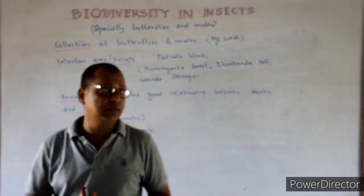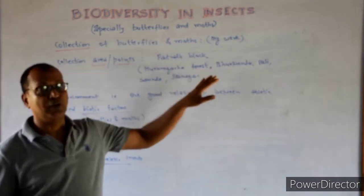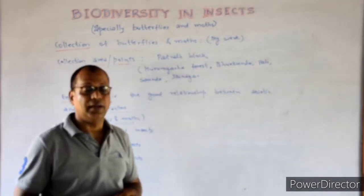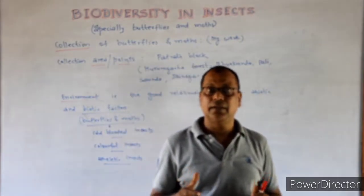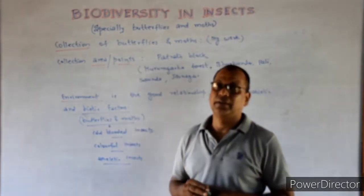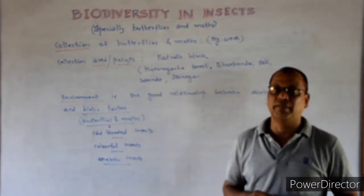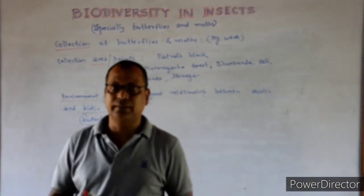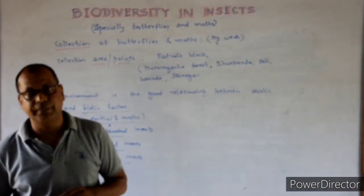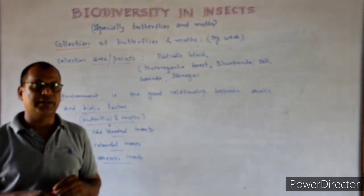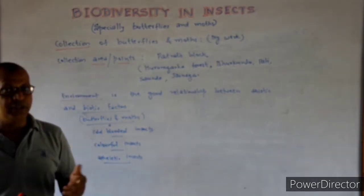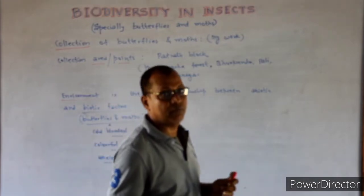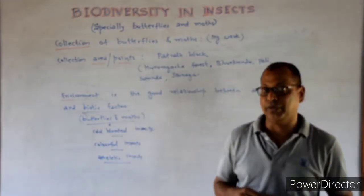My collection areas include the Gurungada forest area, Burkunda, Pali, Saunda, Jayamagar, and others. I collected different species of butterflies and moths. As you know, the environment involves a relationship between abiotic and biotic factors, and in biotic factors butterflies and moths are very important agents.